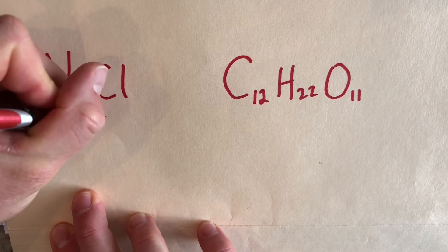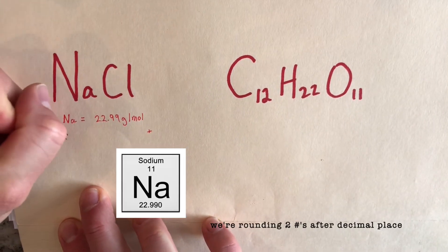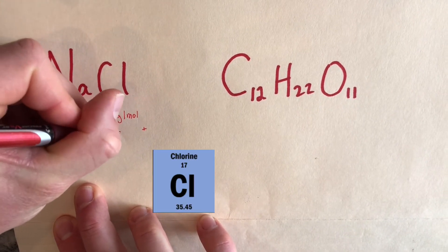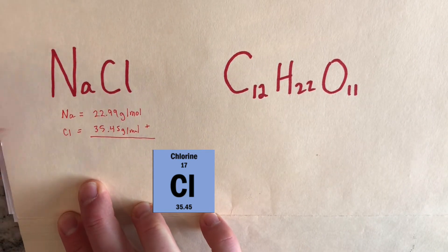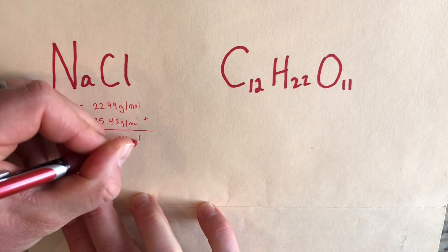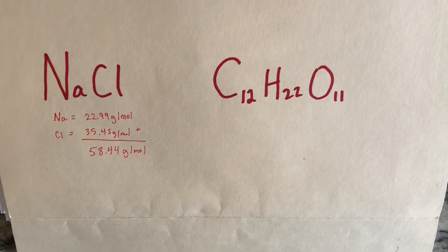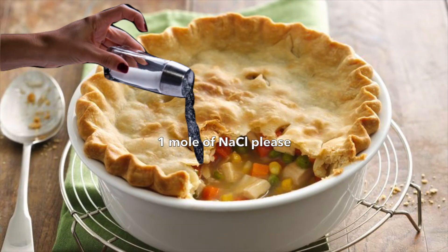We look at the molar mass of Na, which is 22.99 grams per mole. We're going to add that with chlorine's molar mass, which is 35.45 grams per mole. Add that up and it's 58.44 grams per mole. So you might be like, hey Ma, I need one mole of sodium chloride on my chicken pot pie. And she's like, honey, no — that's high blood pressure in a bottle right there.